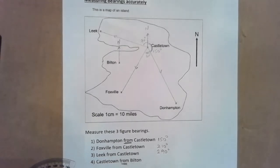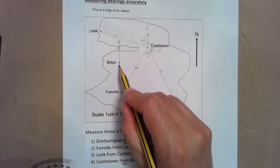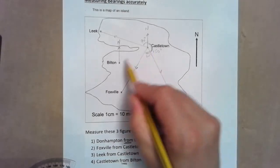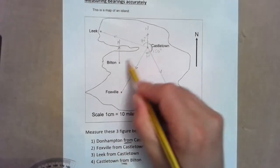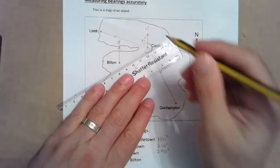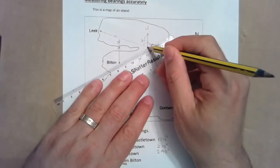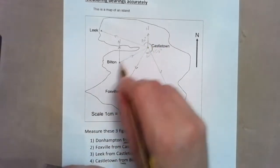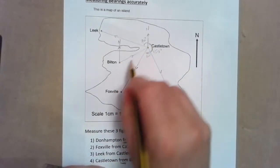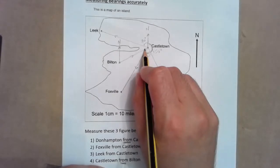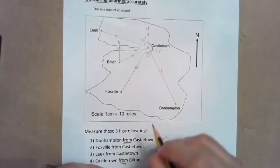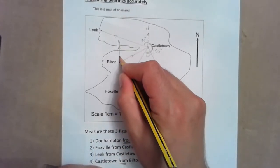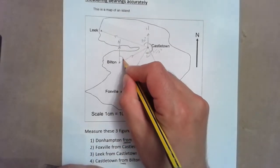Now Castletown from Bilton — that's now changing, we're going from Bilton. Bilton is here, Castletown is here, so we're going from here to there. That direction is northeast.